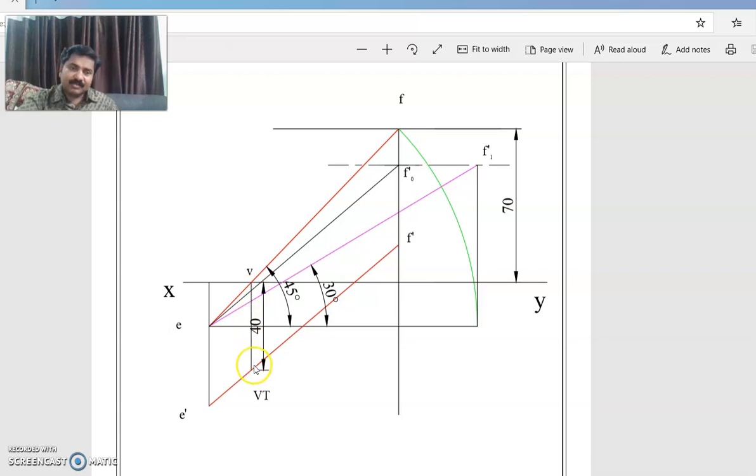So vertical trace will be 40mm below. So this is vertical trace and we know that this E0 dash - E0 dash F0 dash has passed through vertical trace. So we can shift that line in such a way that it passes through the vertical trace.